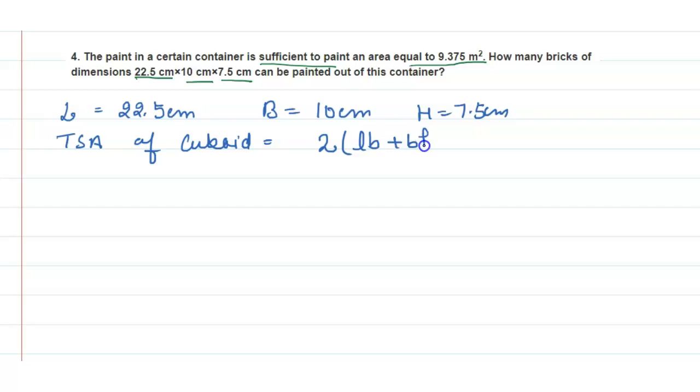Now put the value in this formula. So here l is 22.5 multiplied with b 10 plus 10 multiplied with 7.5 plus 7.5 multiplied with 22.5. Now simplify this, so we will get here 937.5 centimeter square.